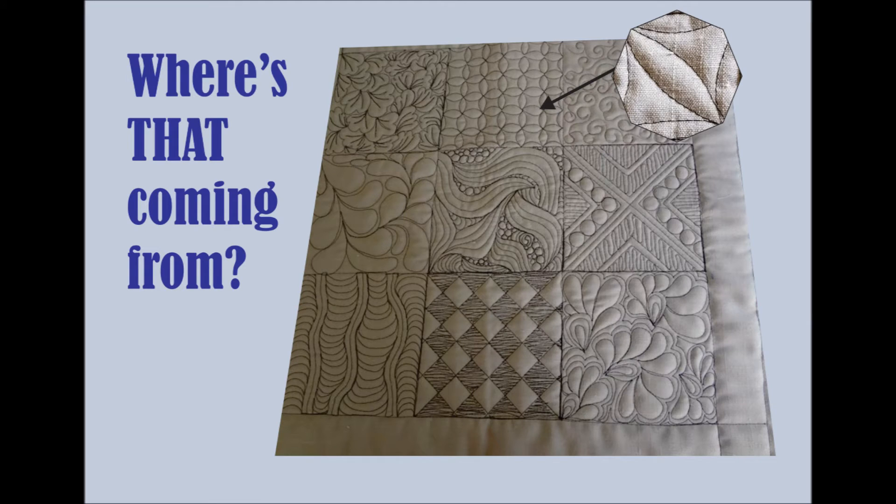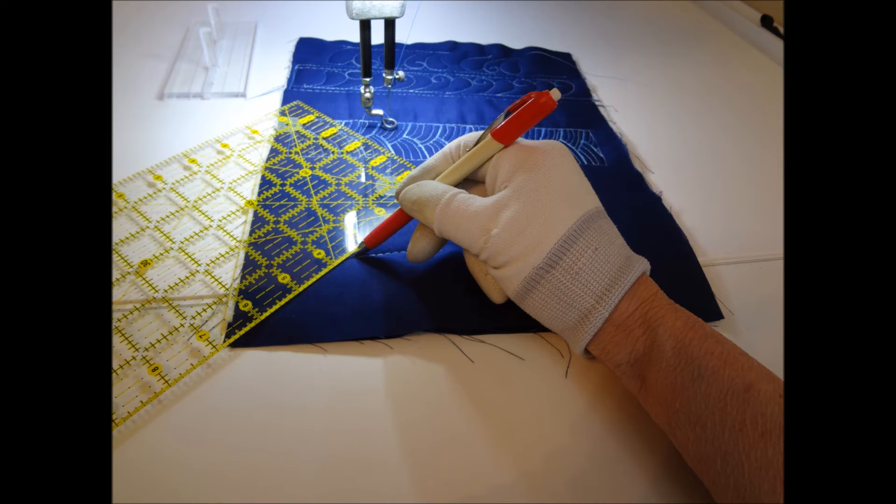So now the only thing that we have left to complete our sample are the cornerstones, and they of course come from the orange peel design. To prepare to make the cornerstone, use a ruler and mark a diagonal line from the inner corner to the outer corner of the square. After you've done that, we're prepared to start the stitching.